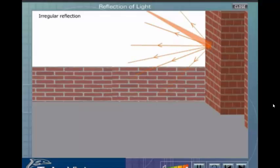Hence the reflection becomes diffused. Irregular reflection is also known as scattering of light. It is due to scattering of light we are able to see the objects around us.